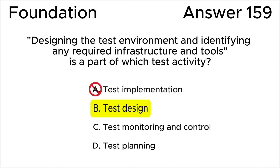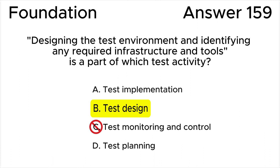All the rest of the answers are wrong. Answer A is wrong because test implementation includes creating or acquiring the test where necessary for test execution. Answer C is wrong because test monitoring involves the ongoing checking of all test activities and the comparison of actual progress against the plan. Test control involves taking the actions necessary to meet the objectives of testing. Answer D is wrong because test planning consists of defining the test objectives and then selecting an approach that best achieves the objectives.